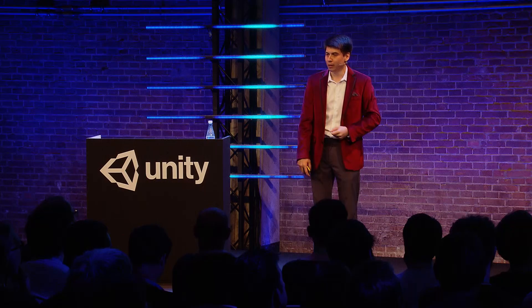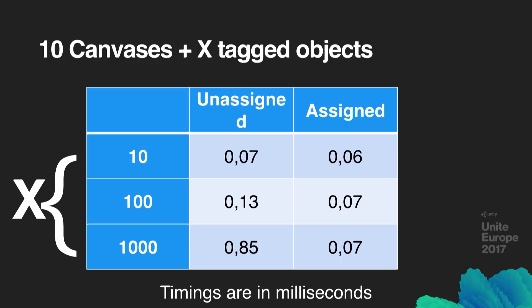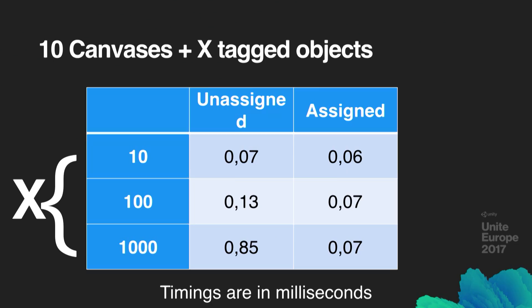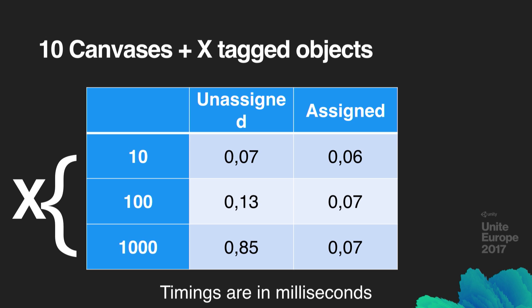I created 10 world space canvases — in one case leaving the event camera unassigned, in another assigning it. When assigned, there is no performance difference in the Graphic Raycaster when accessing the event camera property regardless of how many tagged objects you have. But performance degrades rapidly as the number of tagged objects increases. At 1,000 tagged objects it takes nearly a millisecond just to access Camera.main per frame on a high-end laptop. On an iPhone, this could be as large as four or five milliseconds — unacceptable.